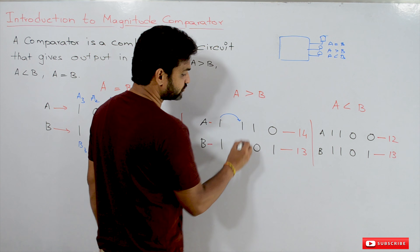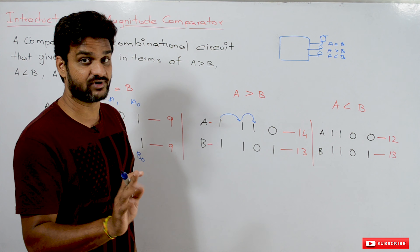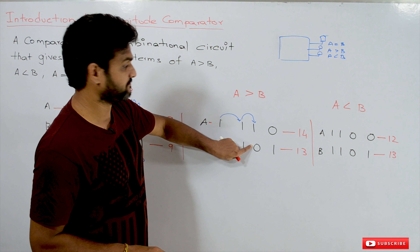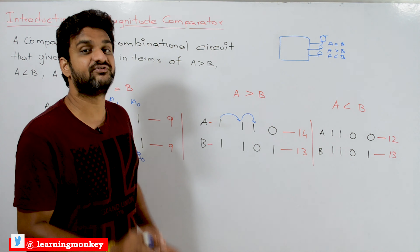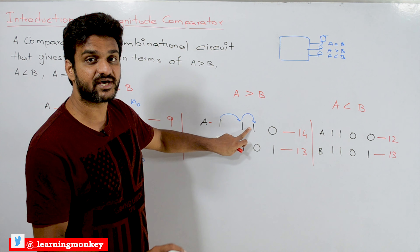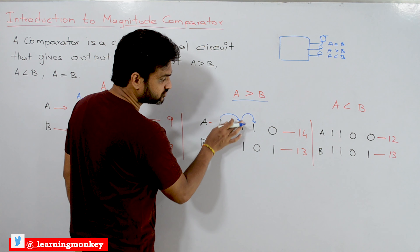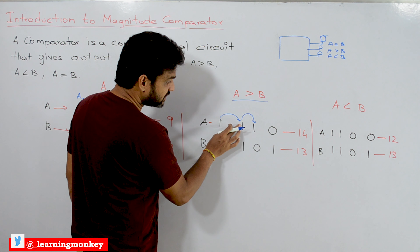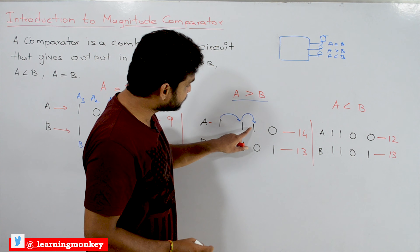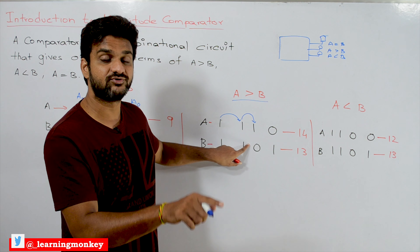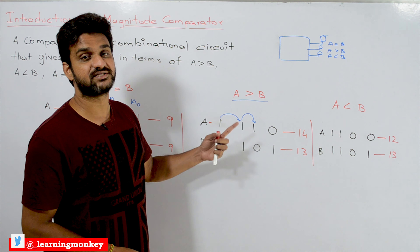Coming to this example: first compare — yes, equal. Then go to A2 and B2 — are they equal? Yes, they are equal. Next go to the next one — are they equal? No, they are not equal. Now we have to decide: is A greater than B? Is this bit 1 greater than 0? We check whether the bit of A is greater than B. If it is, we stop here and decide that A is greater than B.